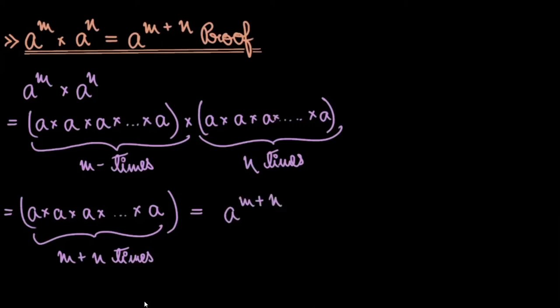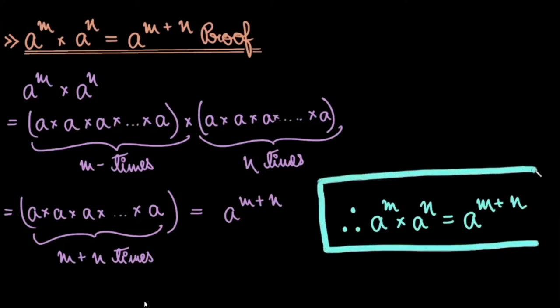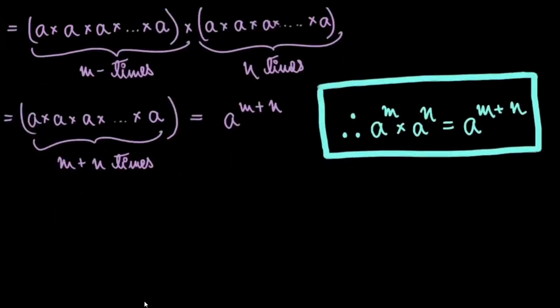In order to make it absolutely clear, let us proceed with a very elementary example. But first let me write the standard result: a to the power m multiplied by a to the power n equals a to the power m plus n. This is the standard result you need to remember — it's quite easy to remember. Now let us understand it clearly with an example.